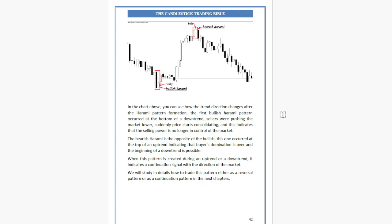In the chart above, you can see how the trend direction changes after the Harami pattern formation. The first bullish Harami pattern occurred at the bottom of a downtrend — sellers were pushing the market lower and the price started consolidating, indicating that selling power is no longer in control. The bearish Harami occurred at the top of an uptrend, indicating that buyer domination is over and the beginning of a downside move is possible. We will study in detail how to trade this pattern as either a reversal or continuation pattern in the next chapter.